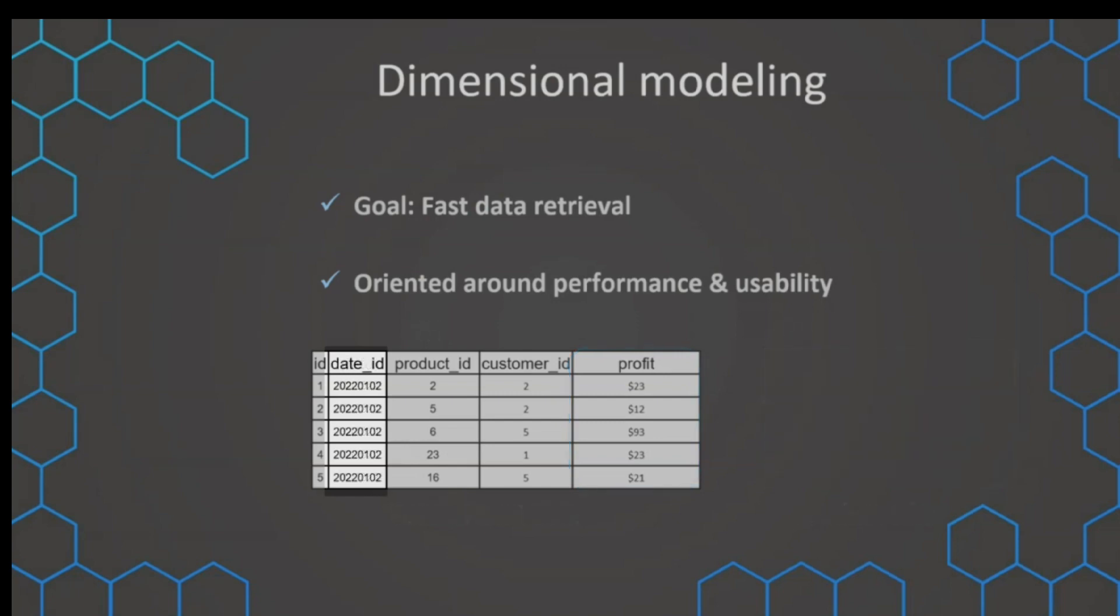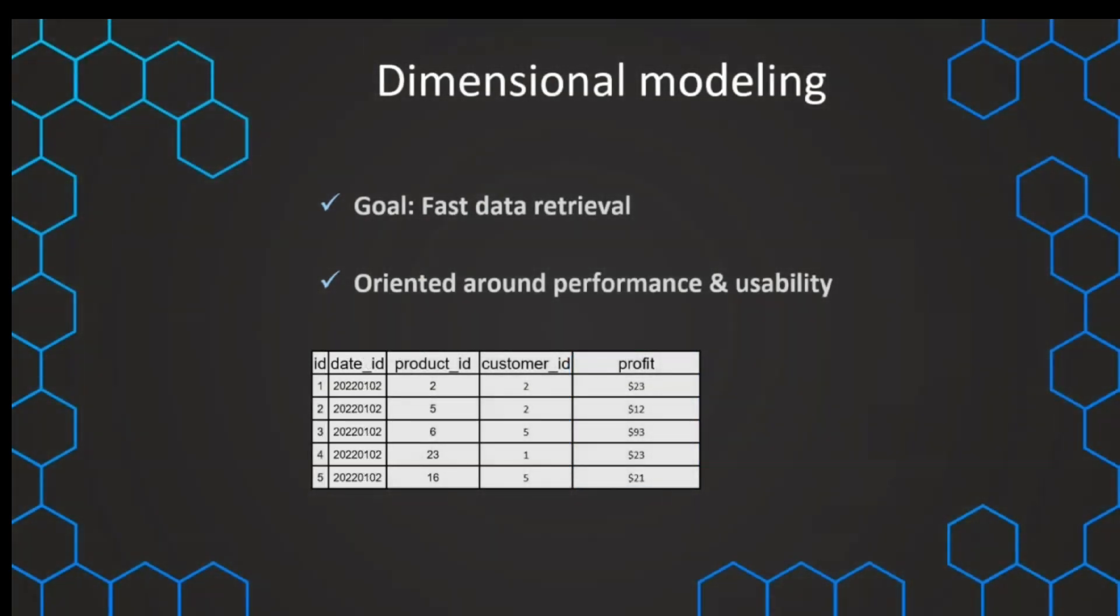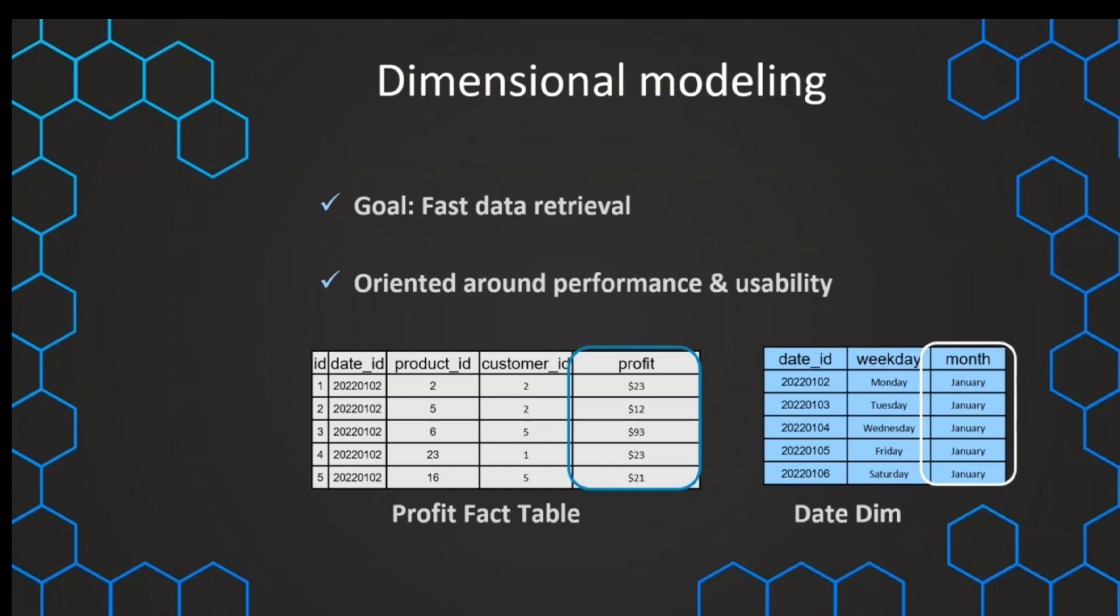For example, if in our case we use a date ID that is just a number consisting of the year, the month, and the day, then we can put all of the date related information into that separate date dimension. And like this we can now easily find all of that date related information in our date table.